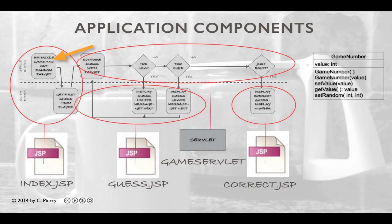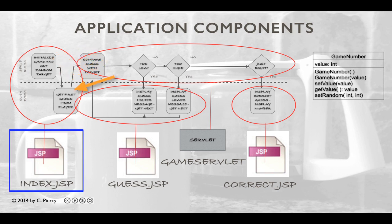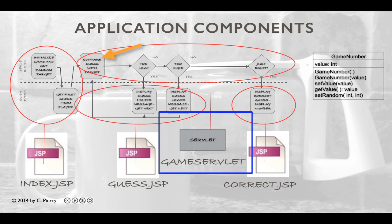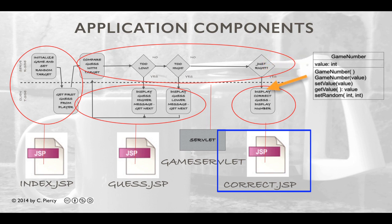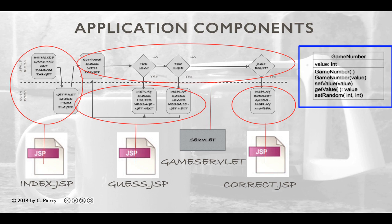Here's how the game will flow. We'll initialize the game and set a random target, then display a view where we can get the first guess from the player. To do this, we'll use the index.jsp component that we're going to create in this video. Once the guess is put in, the user will send a request to the server side where it will hit the game servlet component. The game servlet will compare the guess with the target, and depending on the outcome, will call the guess.jsp component or the correct.jsp component. Along the way, the index, guess, and correct JSPs and the game servlet will make use of the Java class GameNumber.